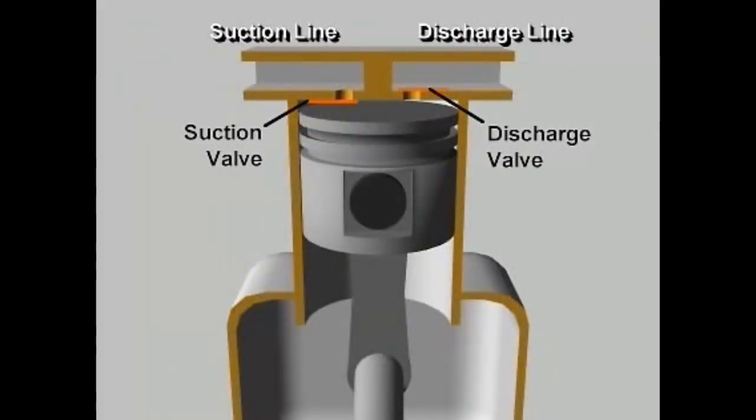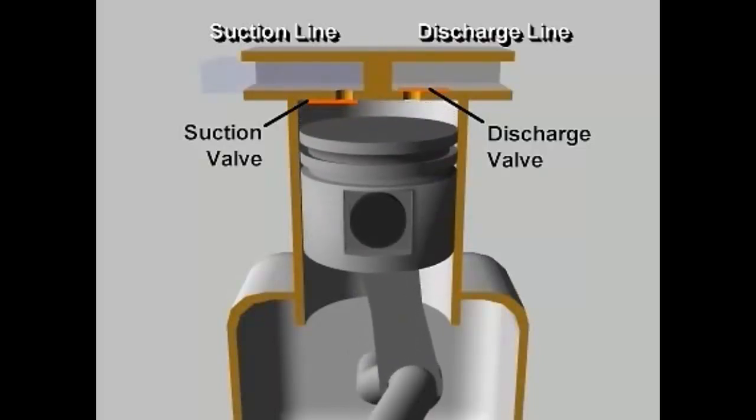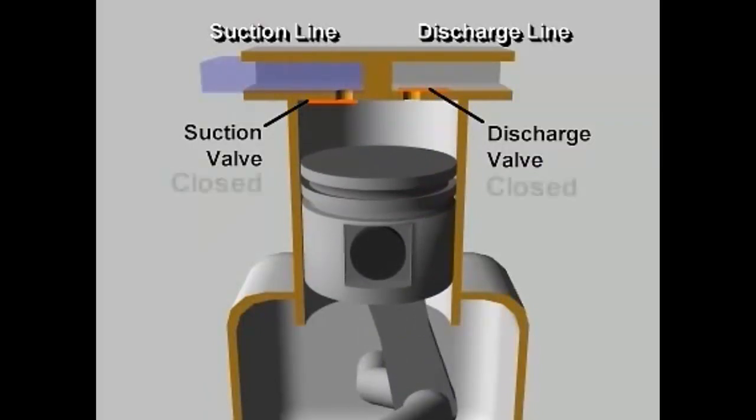Let's follow the compression process in a single cylinder reciprocating compressor during one complete revolution of the crankshaft. Starting with the piston at the top of its stroke, or at top dead center, the piston begins to move downward as the crankshaft rotates.